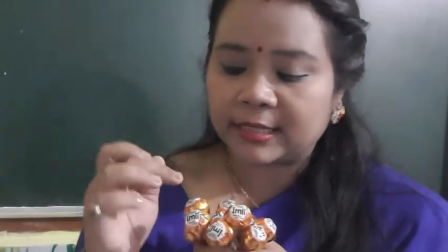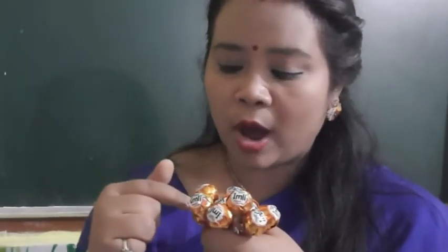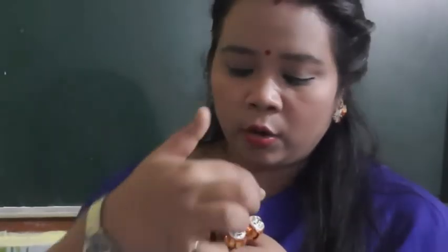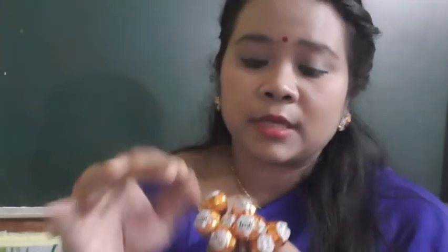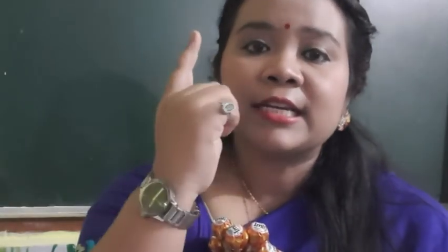So how many ones make 10 lollipops? One, one, one, one, one, one, one, one, one, one — ten! So how many ones make ten lollipops? Ten ones. But children, do you know that ten ones is called one ten? That means it's a bundle of one ten.